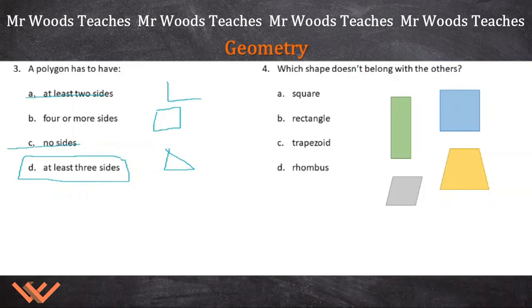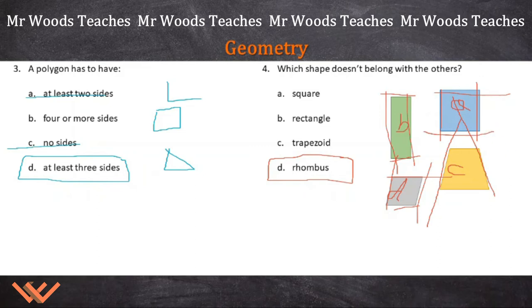Number 4. Which shape doesn't belong with the others? We have a square, a rectangle, a trapezoid, and a rhombus. The trapezoid has two parallel sides. The square has two sets of parallel lines. The rhombus has parallel sides. But look at the trapezoid - those sides are not parallel. So I evaluated them and knew what they were. I labeled them all and asked what's the difference? When those lines are parallel, they are similar. But here, these are non-parallel sides.